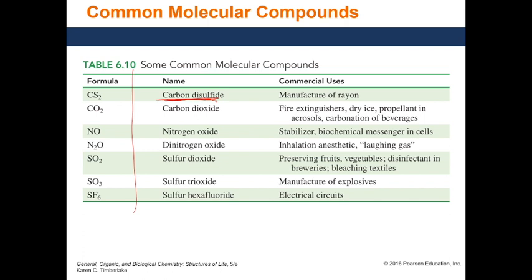To write the formula, write the first element: carbon comes first. 'Disulfide' means two sulfurs — whatever the prefix is becomes your subscript in the molecular formula. So the formula is CS2. For 'carbon dioxide': carbon is one so no prefix needed, 'dioxide' means two oxygens, so the formula is CO2. The rule is: prefix → subscript when going from name to formula.